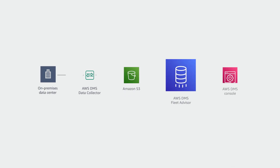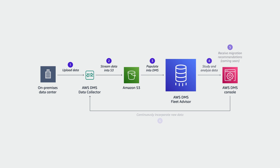Now that we know where Fleet Advisor fits into the ecosystem of tools, let's talk about how it works. It has a local collector that we install into an on-premises data center, which gathers all of the information about OS servers and databases that are discovered, and then uploads all that data to your S3 bucket. From your S3 bucket, it is populated into the DMS console where you can audit the inventory and do some analysis to understand schema complexity and duplicate schemas. It's a continual process of gathering more information about databases that is then available to audit in your DMS console.